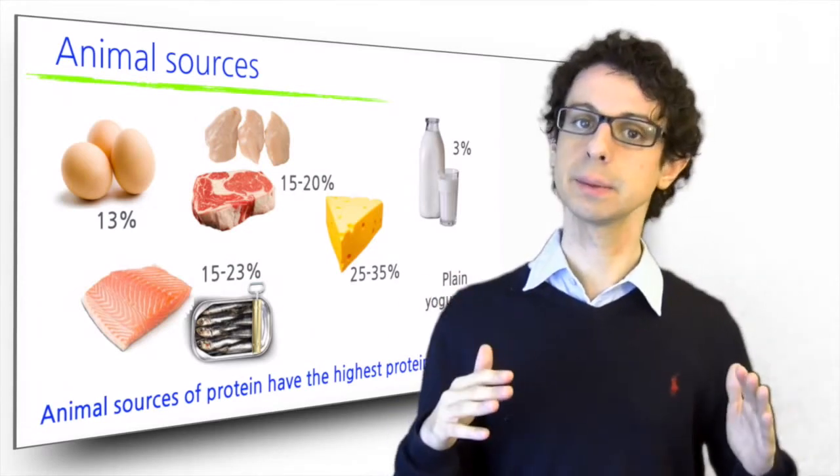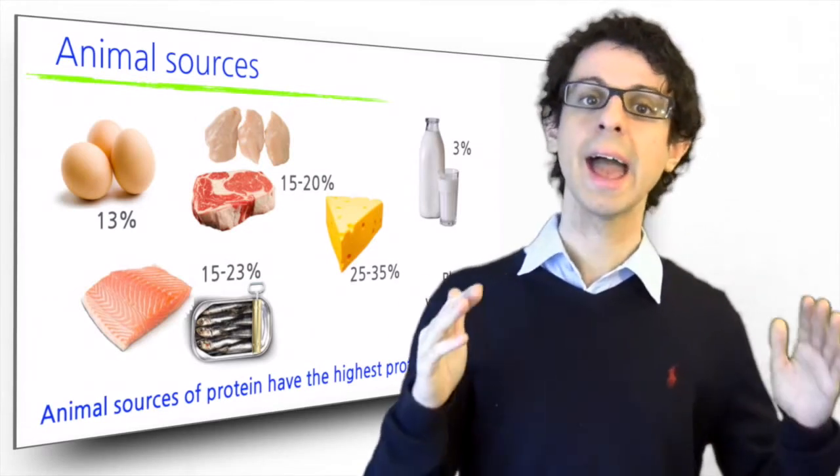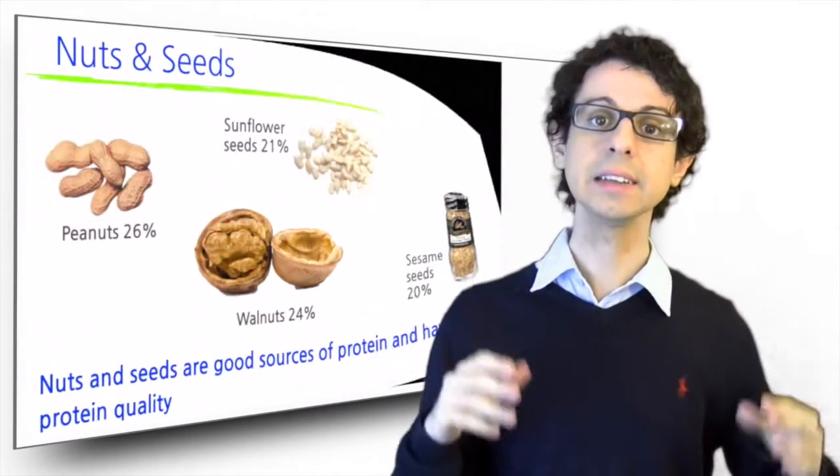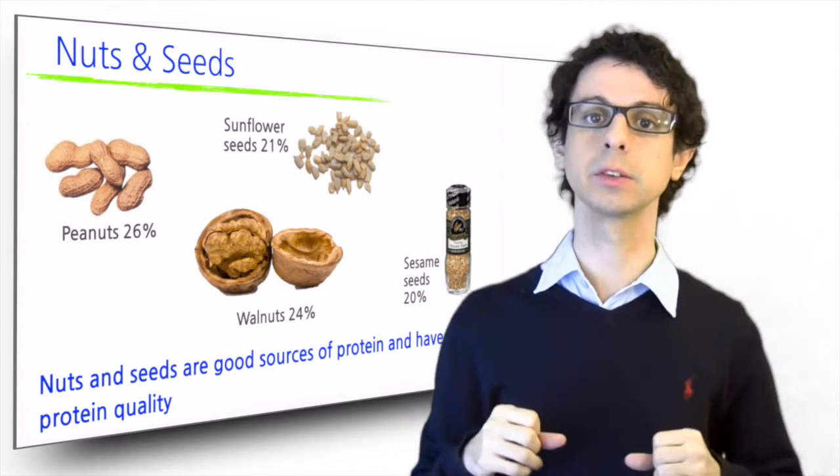However, like we said at the beginning of our protein section, animal food is not the only source of proteins. Nuts and seeds for example are very good sources of protein.